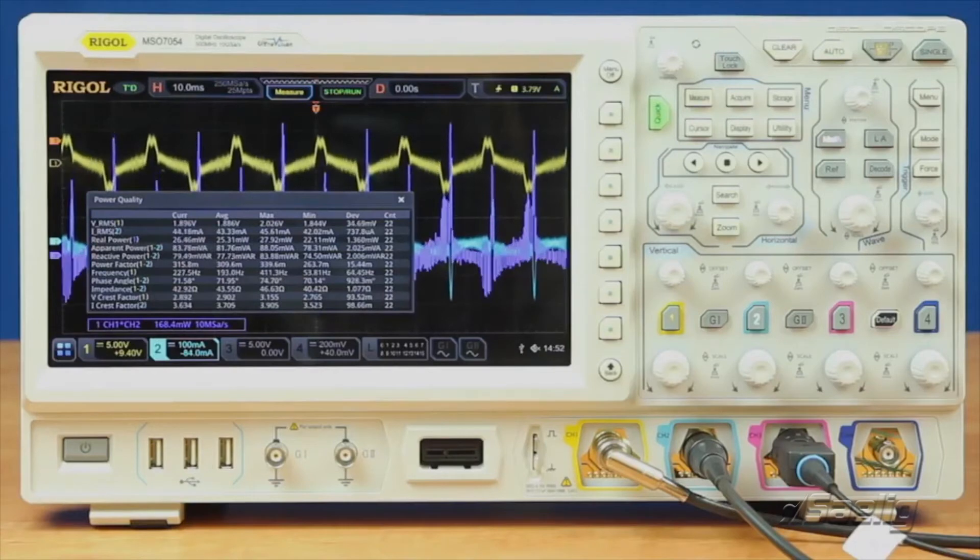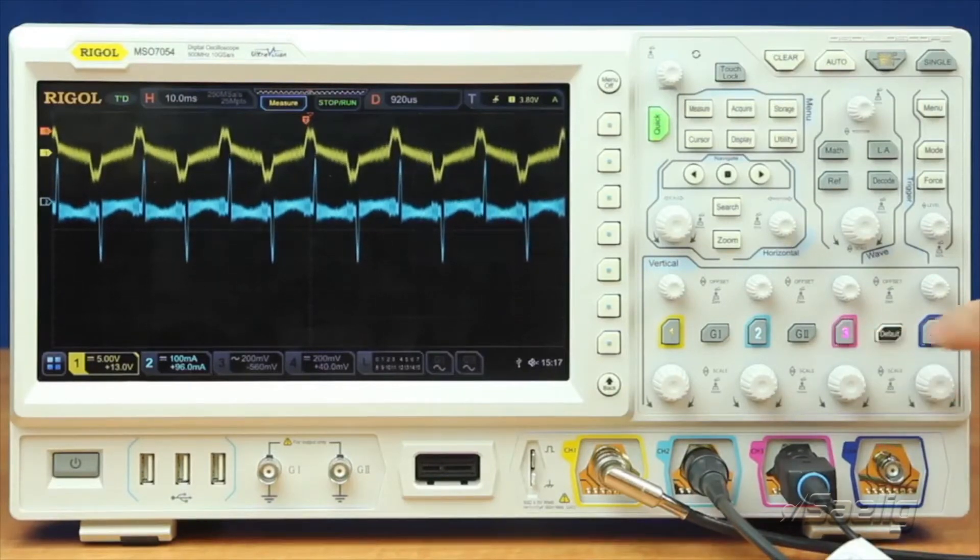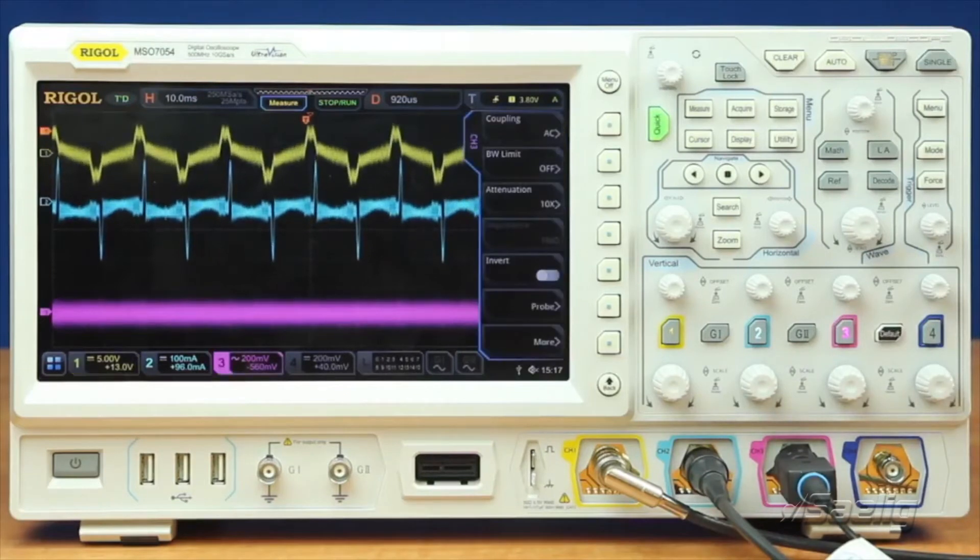Now let's move on to the output ripple. So the next power analysis measurement we can make directly on the 7000 series oscilloscope is the output ripple. So here we'll turn on our third channel. This is connected to the output side of our power supply, where we're drawing 100 milliamps in a DC fashion.